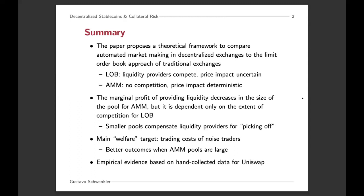Basically whenever you incur a trade, you know exactly how you're going to affect prices. What the paper shows, and where it really disentangles automated market making from limit order books, is that in an AMM setting, the marginal profit of providing liquidity decreases in the size of the pool, while for a traditional limit order book, this really only depends on the extent of competition. So in a way, automated market making settings are preferable for liquidity providers when the size of the pool is small, and that's one of the key things also validated in the empirical application.